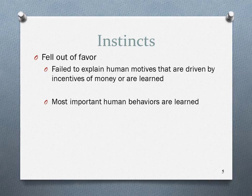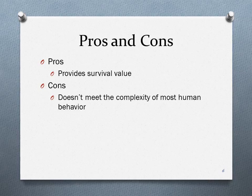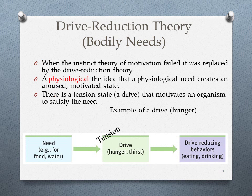The instinct theory fell out of favor for two reasons. First, it failed to explain human motives driven by incentives like money or by learned behaviors. Most important human behaviors are learned, so the theory didn't fully explain why we do them. It does provide survival value, but it doesn't account for the complexity of most human behaviors. It links best to the biological/evolutionary category of the biopsychosocial model.